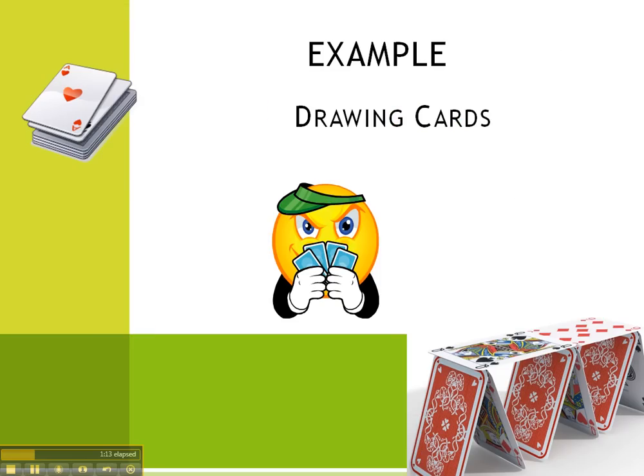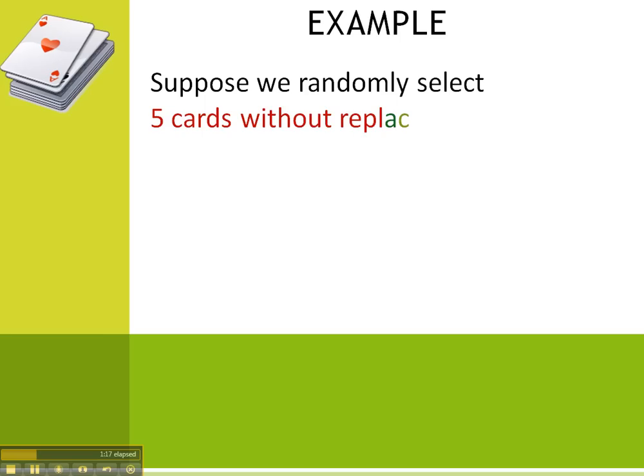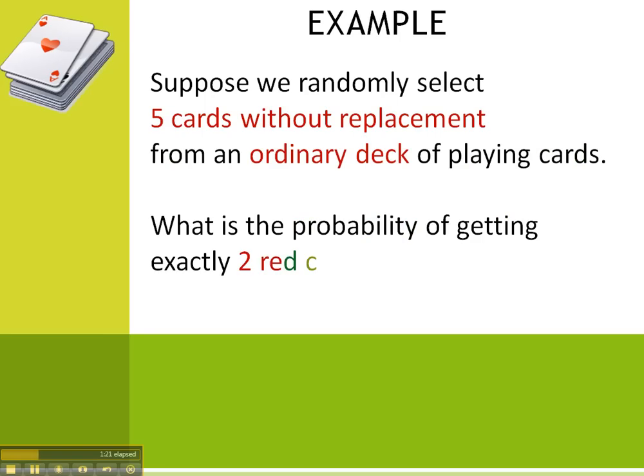Let's do an example. We're drawing cards. Suppose we randomly select five cards without replacement from an ordinary deck of playing cards. What is the probability of getting exactly two red cards? Now, you may not be familiar with a deck of cards, so if not, we should know that there are 52 cards in a deck.